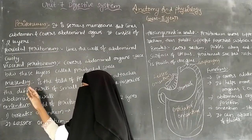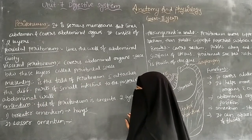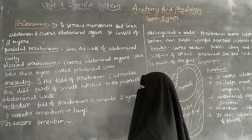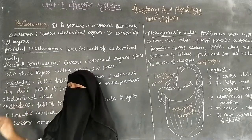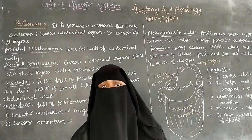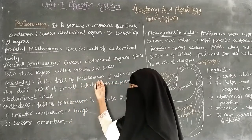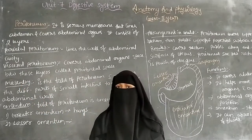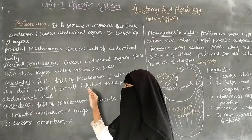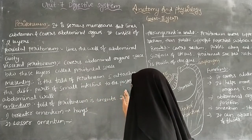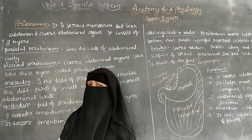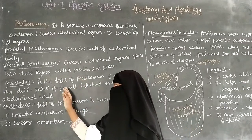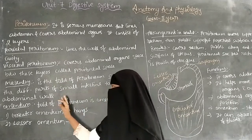The next structure is the mesentery. The mesentery is a fold of the peritoneum which attaches the different parts of the small intestine to the posterior abdominal wall. So the mesentery is a folding of the peritoneum that attaches the small intestine to the posterior abdominal wall.